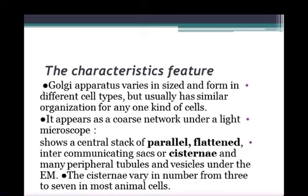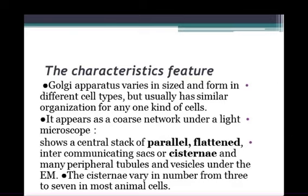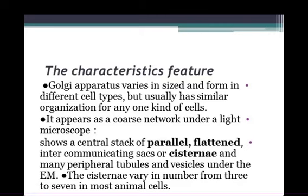The characteristics and features of the Golgi Complex: the Golgi apparatus varies in size and form in different cell types, but usually has a similar organization for any one kind of cell. It appears as a coarse network under the light microscope, showing a central stack of parallel flattened intercommunicating cisternae, and many peripheral tubules and vesicles under the electron microscope. The cisternae vary in number from 3 to 7 in most cells.